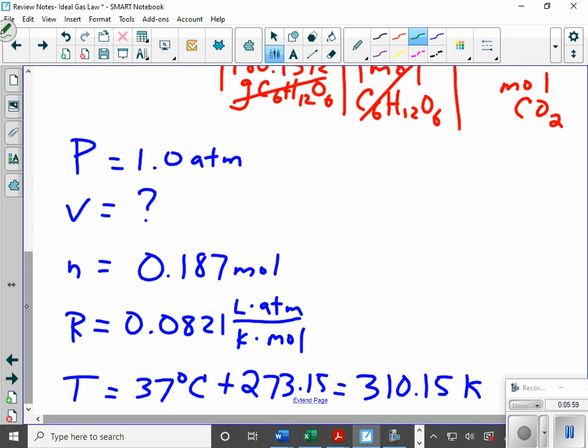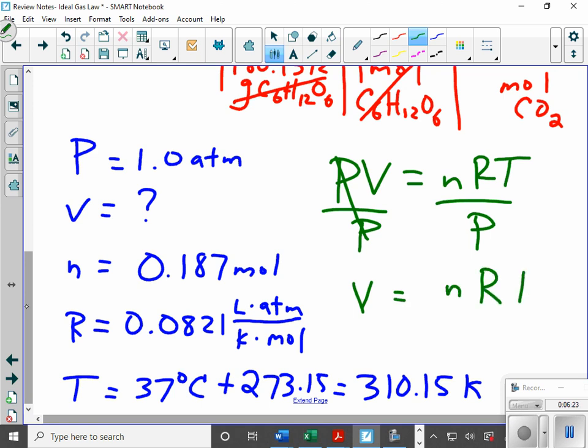Now I am going to take and I'm going to manipulate my PV equals nRT, my ideal gas law equation. I am solving for volume, so I want volume by itself. I'm going to divide both sides by P. So my volume is equal to my number of moles times my gas constant times the temperature in Kelvin, divided by the pressure.